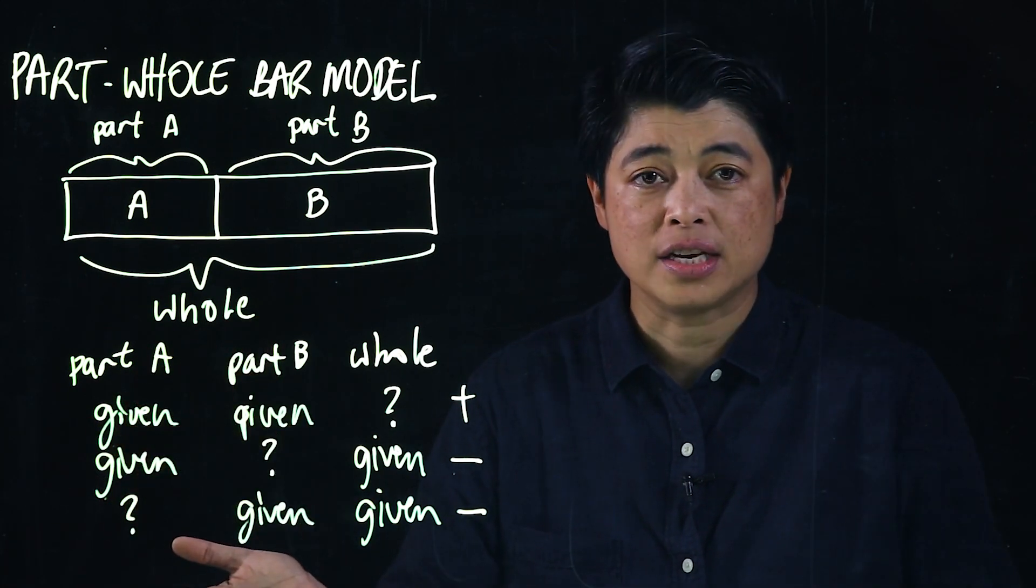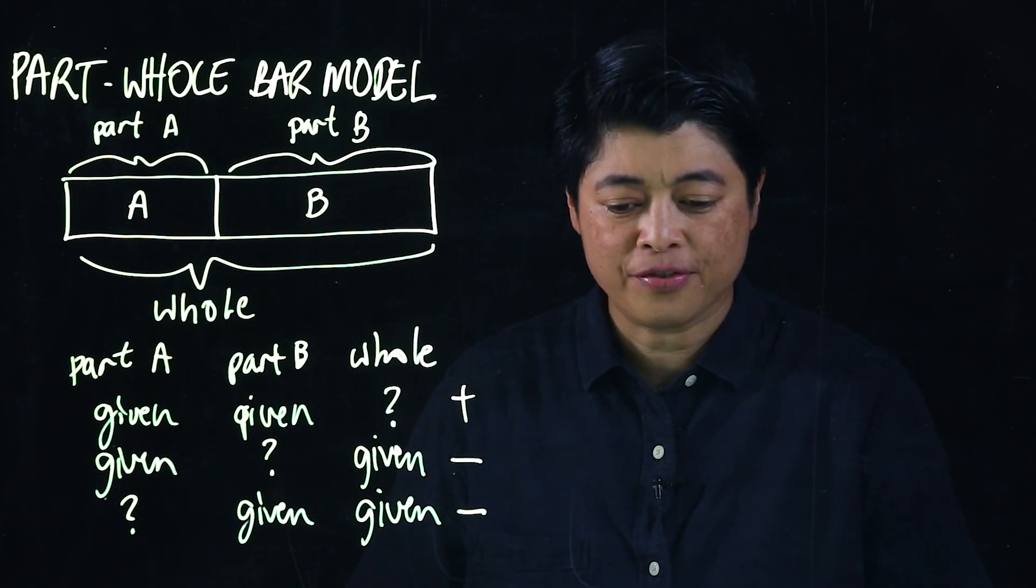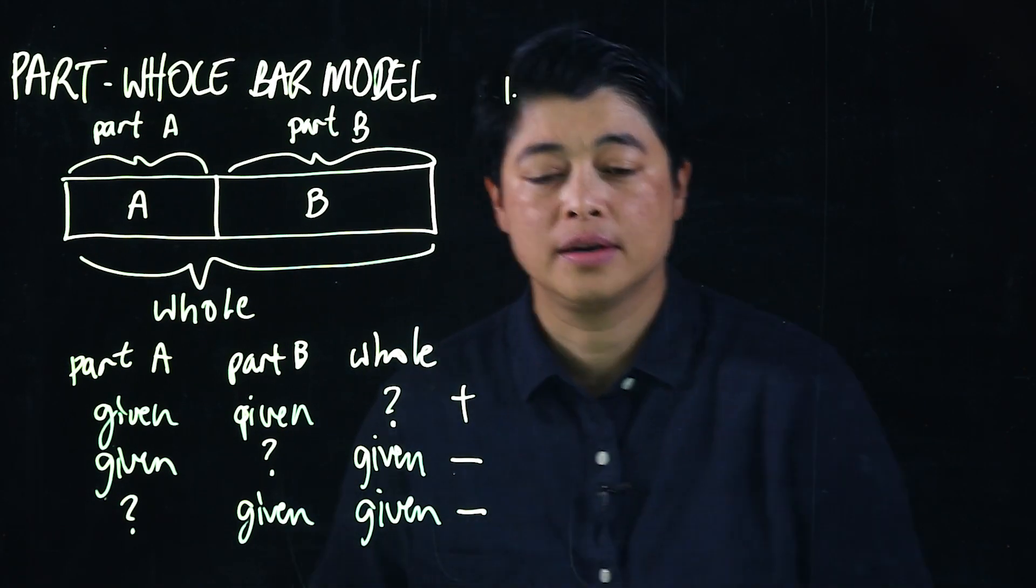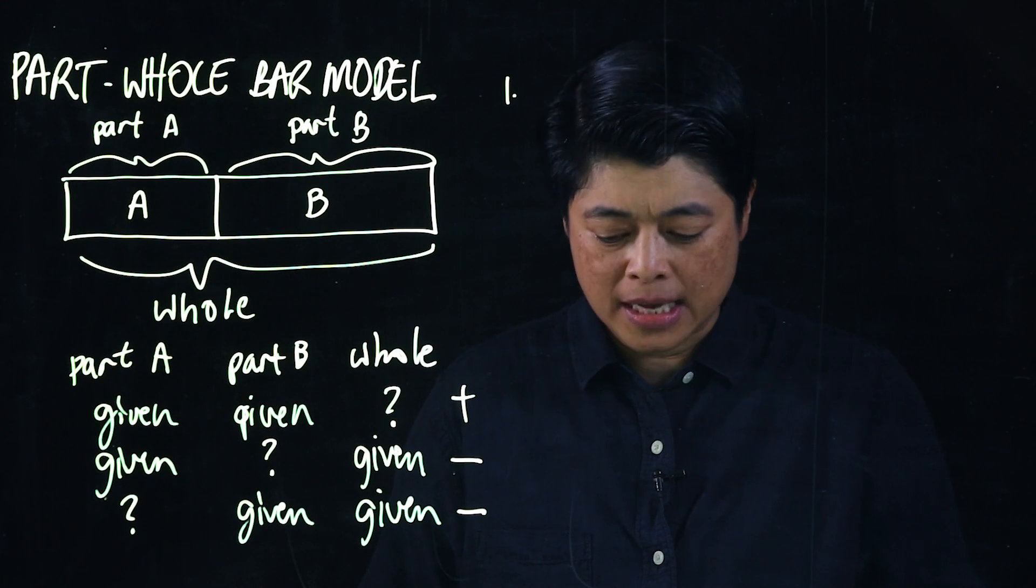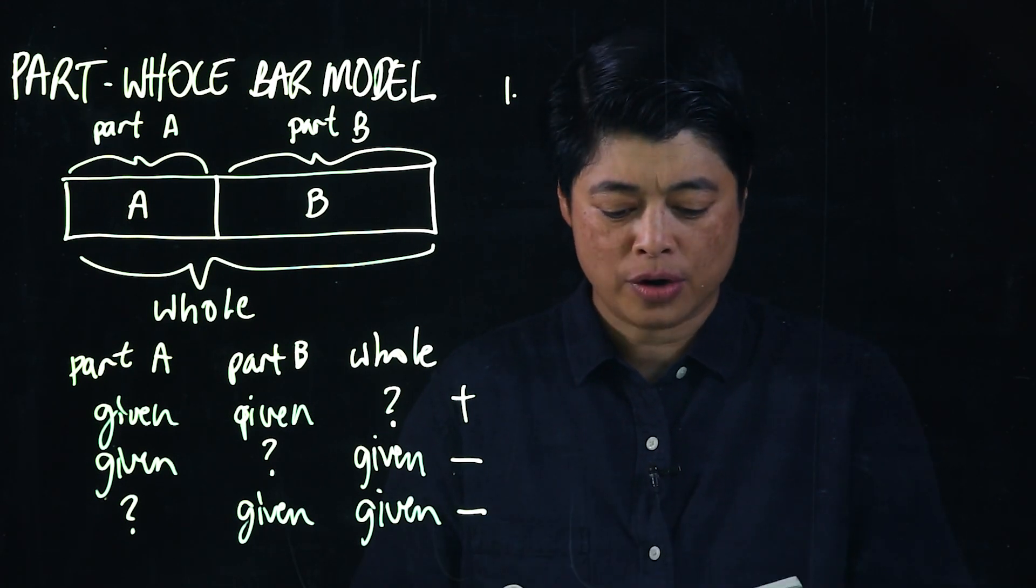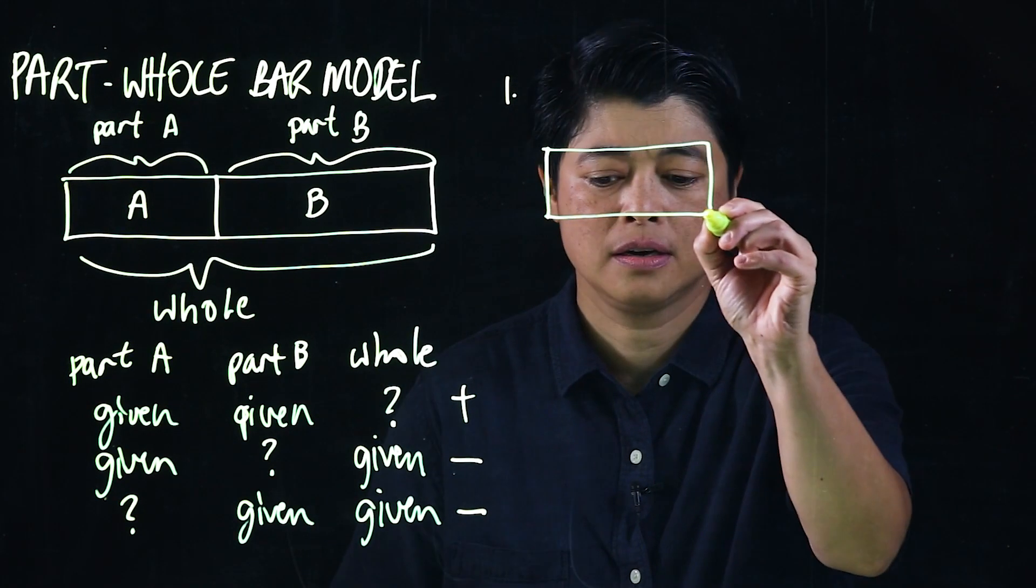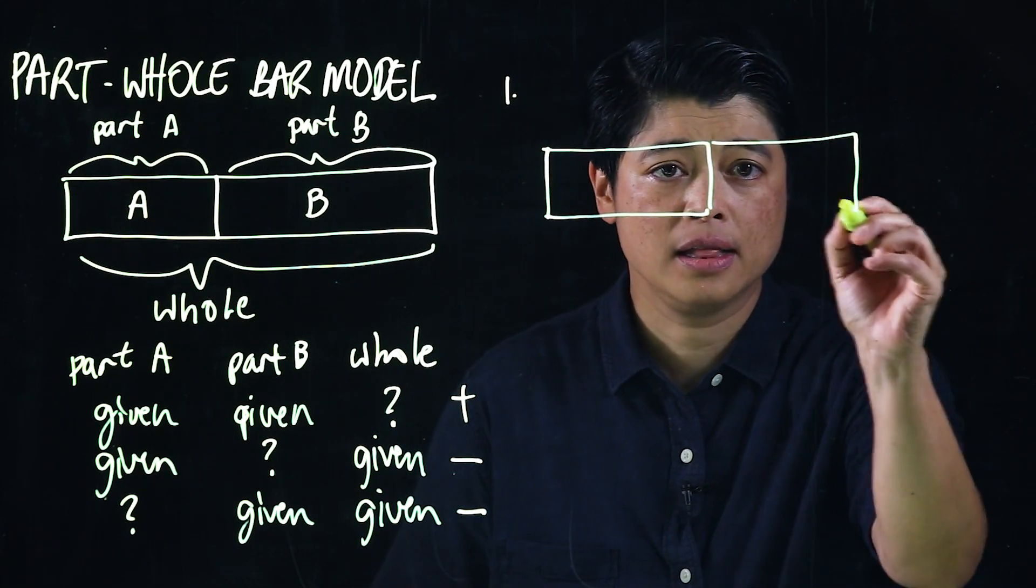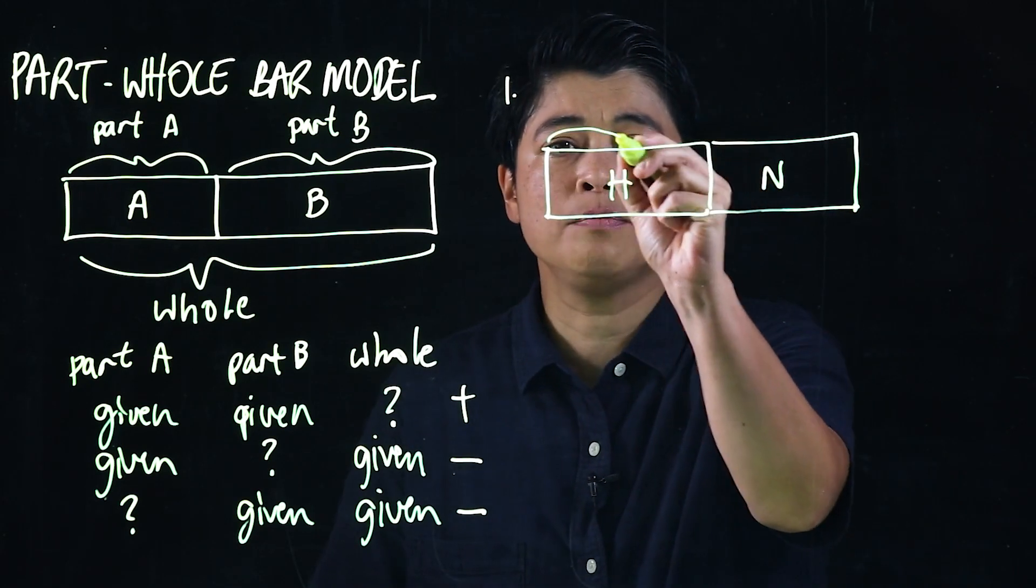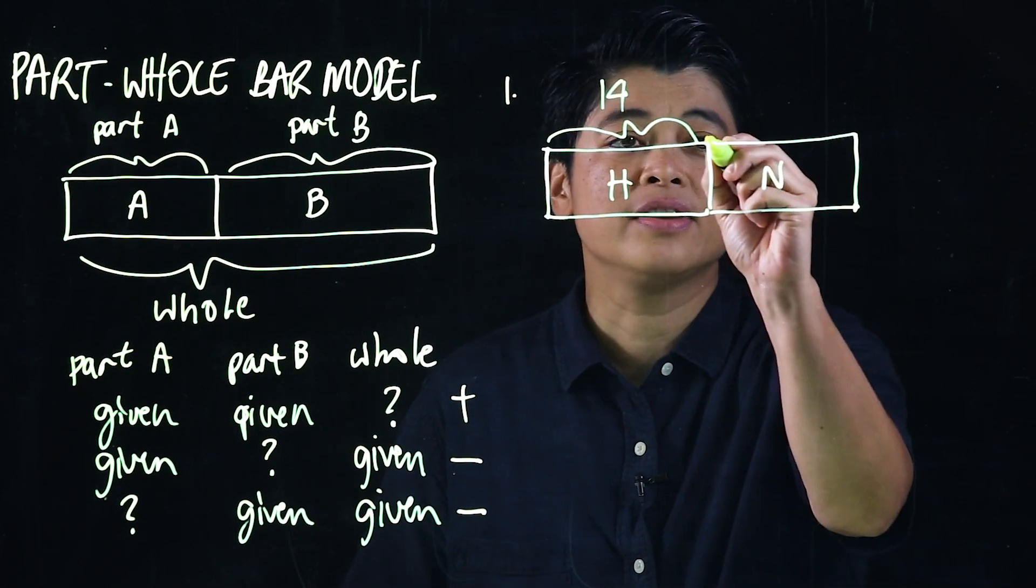As examples we have two problems from page 63. Problem number one says: Helen bought 14 strawberries and Nala bought 17 strawberries. The characters are Helen and Nala. Here's Helen, here's Nala. Helen bought 14 strawberries, Nala bought 17 strawberries.